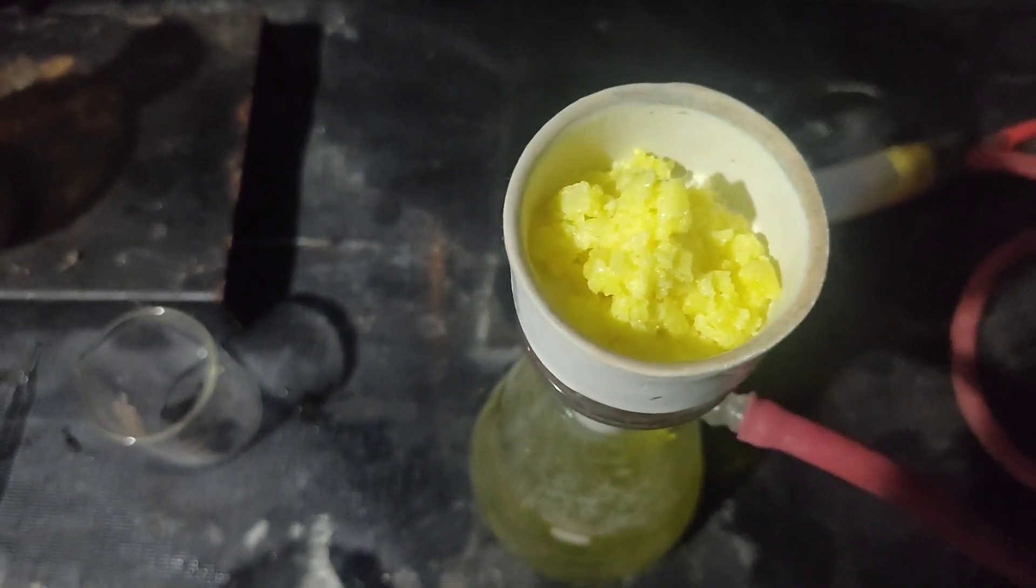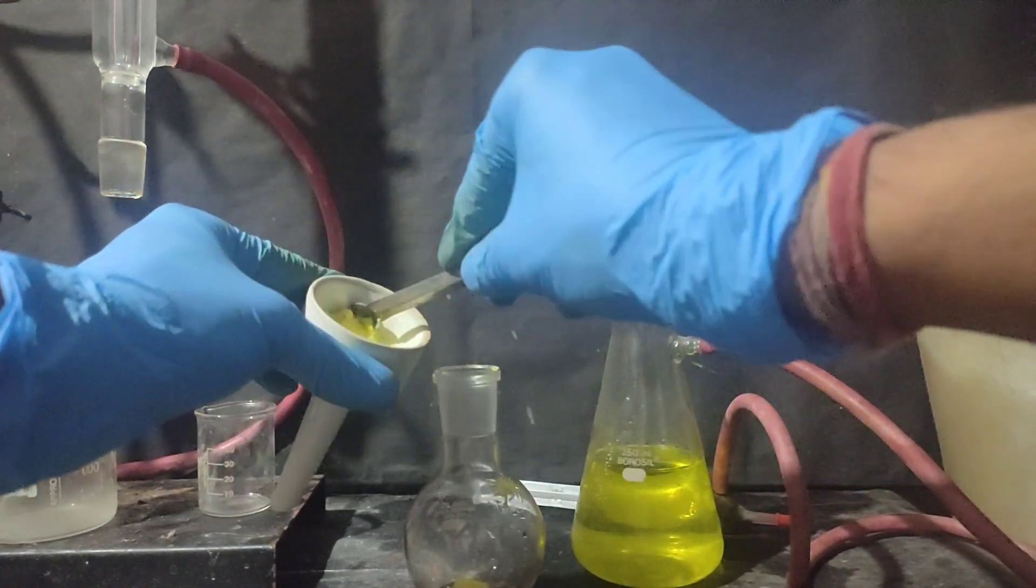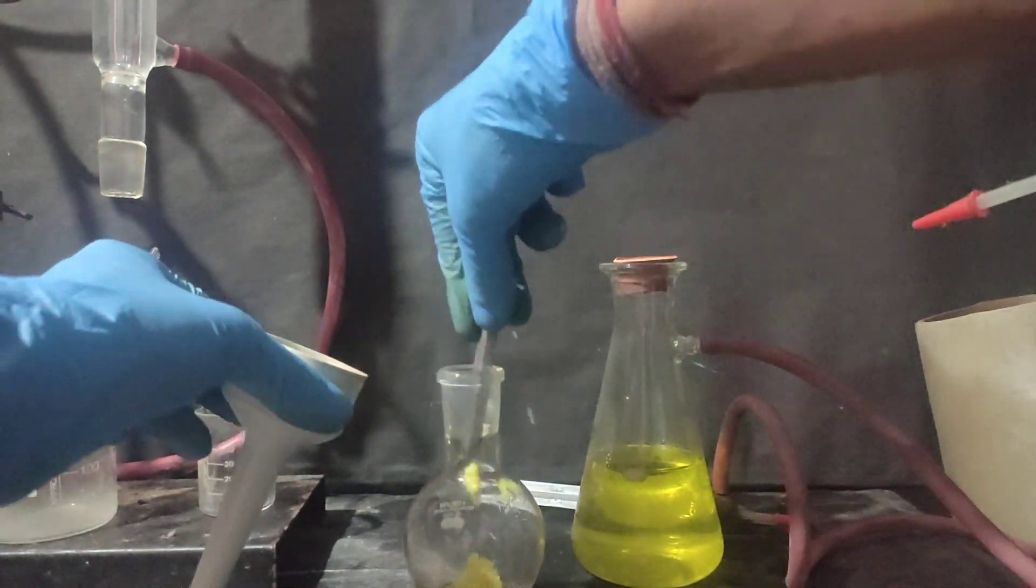This is the crude meta-dinitrobenzene. Now, to purify it, I will be recrystallizing it from 95% alcohol.